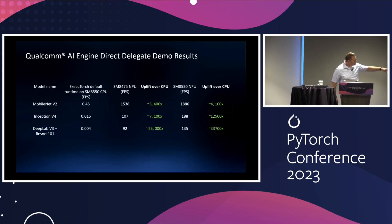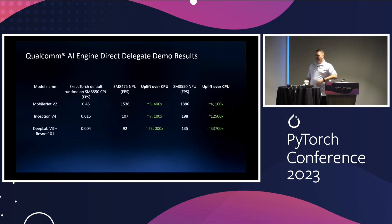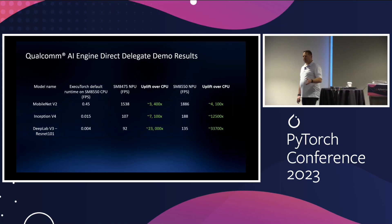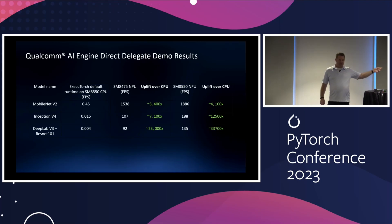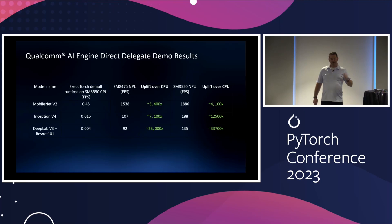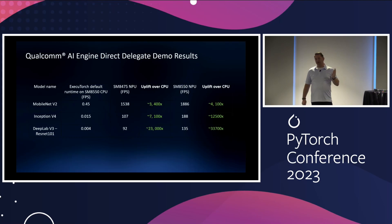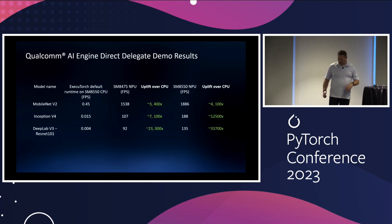For example, DeepLab v3 hits 92 frames per second. What does that mean? If you're building something to analyze games on a per-frame basis or doing video conferencing, once you go past 30 or 60 fps, a whole world of possibilities opens up — live video conferencing, live inferencing. Once you take a frame from the sensor, apply your model, you can do a whole bunch of other things before the next frame shows up. That frees up CPU and GPU for additional things in your application.